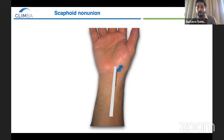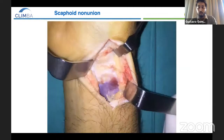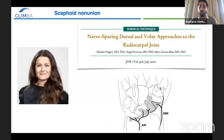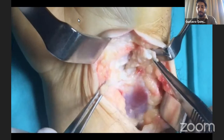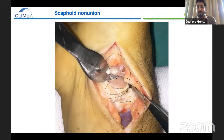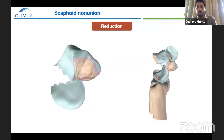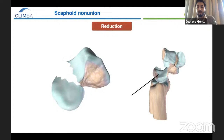This technique starts with an incision parallel to the FCR, following the scaphoid tubercle until the trapezoid crest. We repair the anterior branch of the carpus and expose the watershed line. We always perform a capsulotomy following Elizabeth Hager, Angel Ferreres, and Mark Garcia-Layas' nerve-sparing approach. And that's how we have a very nice access to the scaphoid and the non-union site.